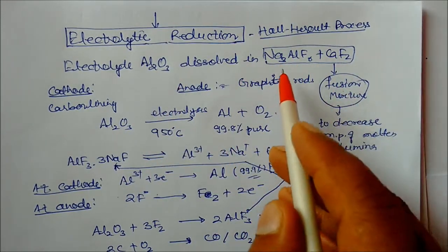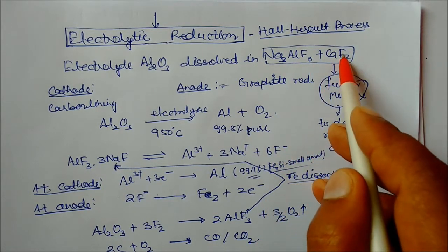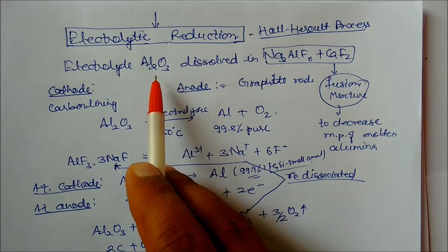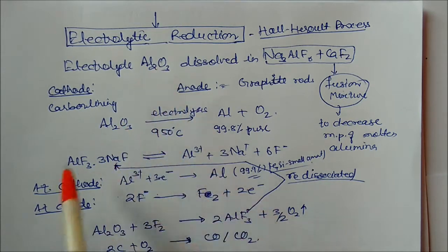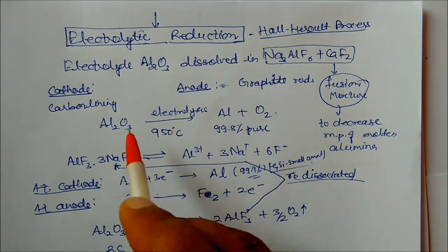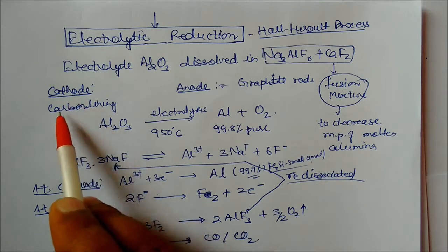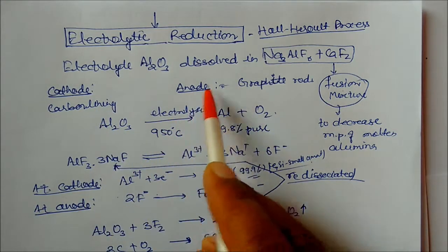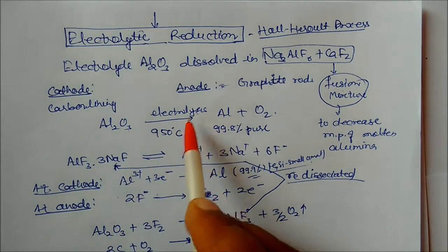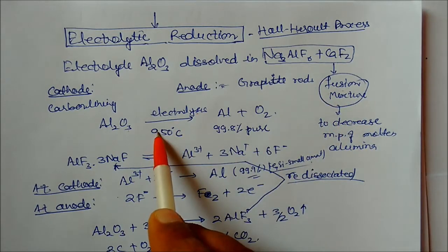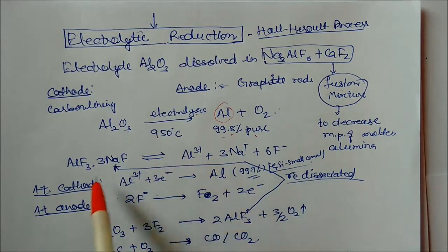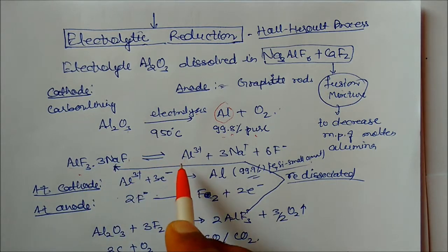In the Hall-Héroult process, aluminium oxide is dissolved in a fusion mixture of sodium aluminum fluoride (cryolite), calcium fluoride (CaF2). In this mixture aluminium oxide becomes a good conductor of electricity. Carbon electrodes are used and the apparatus uses graphite rods for both cathode and anode. Electrolysis at 950 degrees centigrade gives 99.8 percent pure aluminium and oxygen.